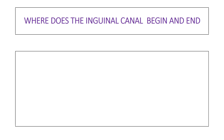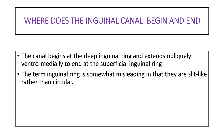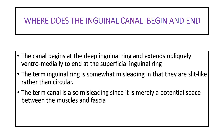The inguinal canal has two openings: a deep opening in the abdominal region and a superficial opening. The superficial opening in the male leads into the scrotal sac. The canal begins at the deep inguinal ring and extends obliquely ventromedially to end at the superficial inguinal ring. The term inguinal ring is somewhat misleading because these openings are not truly circular but rather slit-like structures. Likewise, the term canal is misleading since it is merely a potential space between the muscles and fascia, filled with connective tissue.